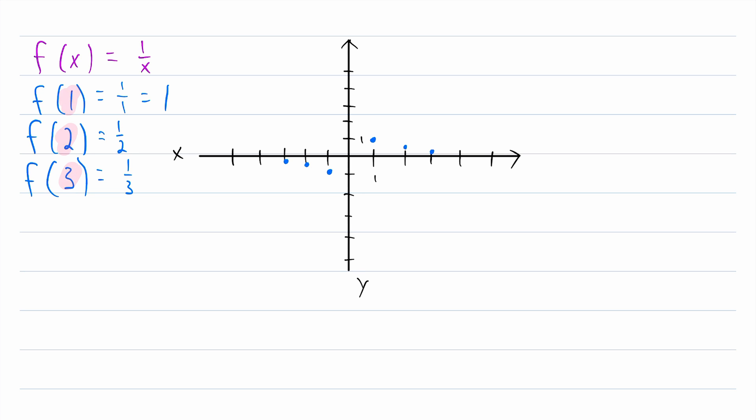Now, instead of having our x values get further away from 0, let's get closer to 0. Let's try evaluating the reciprocal function at x equals 1 half. That's going to be 1 over 1 half. And remember, dividing by a fraction is the same as multiplying by the fraction's reciprocal. So 1 over 1 half is equal to 1 times 2 over 1, which of course is equal to 2.